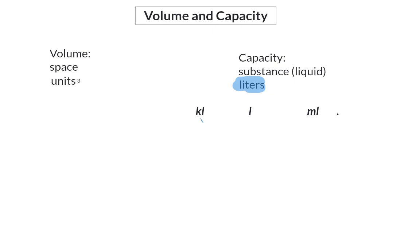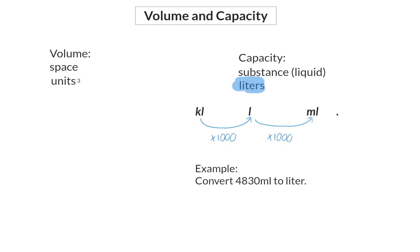From kiloliters to liters, we multiply by a thousand — the same as from kilometers to meters. From liters to milliliters, you multiply by a thousand again, because remember we have centiliters in between: from liters to centiliters we multiply by a hundred, and from centiliters to milliliters, another ten. When moving in the opposite direction, we divide by the same value — in this case, divide by a thousand.